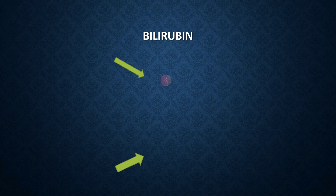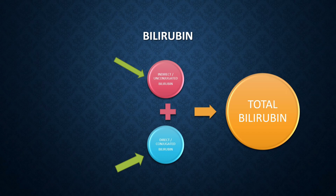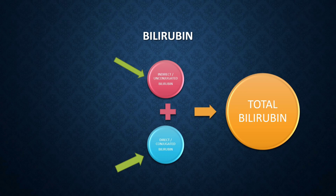The first one is bilirubin. There are two types: indirect bilirubin (unconjugated bilirubin) and direct bilirubin (conjugated bilirubin). The total of both is known as total bilirubin. Indirect or unconjugated bilirubin enters the liver and conjugates with glucuronic acid in the hepatocyte, converting into conjugated or direct bilirubin. This process of glucuronic acid conjugation is crucial for detoxification by the liver.